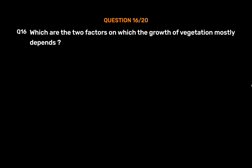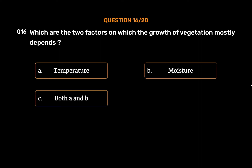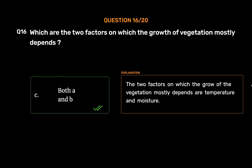Question number 16: Which are the two factors on which the growth of vegetation mostly depends? Option A: Temperature. Option B: Moisture. Option C: Both A and B. Option D: None of these. The correct answer is Option C: Both A and B. The two factors on which the growth of vegetation mostly depends are temperature and moisture.